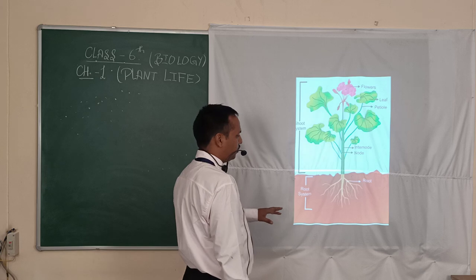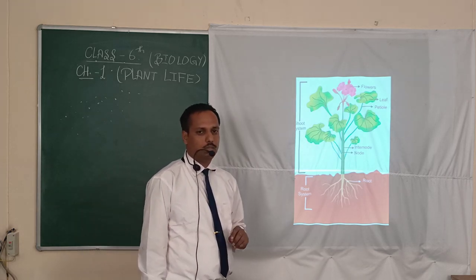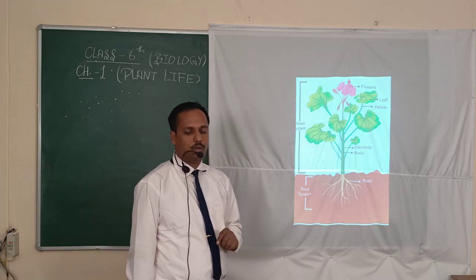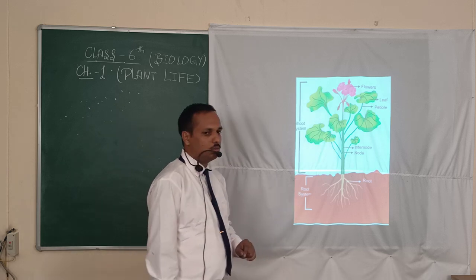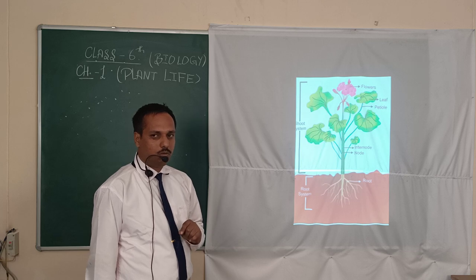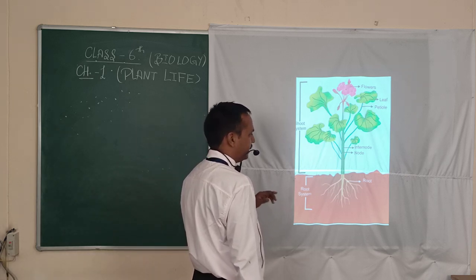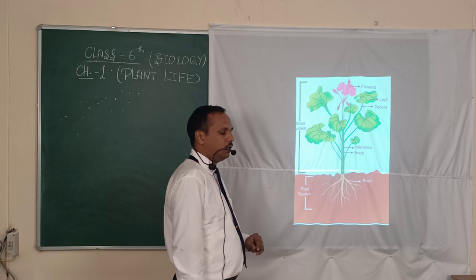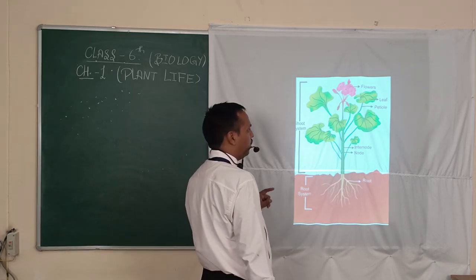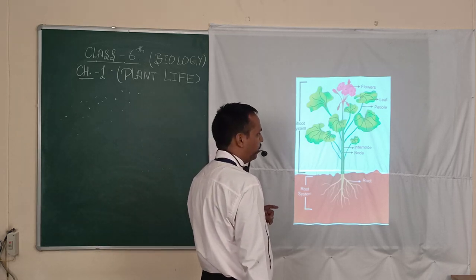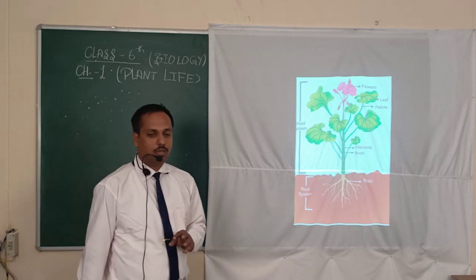A plant is divided mainly into two parts. The first part that is under the soil is called the root system. It absorbs water and minerals for the plant. The second part that is above the soil is known as the shoot system. It mainly consists of leaves, flowers, fruits, and all other parts present above the soil.